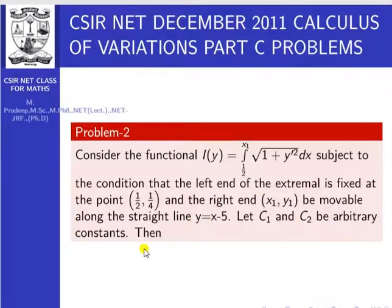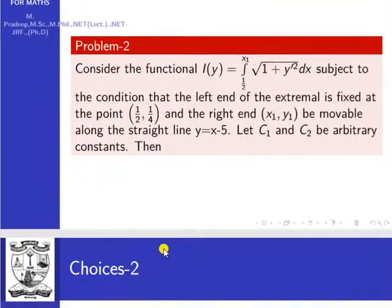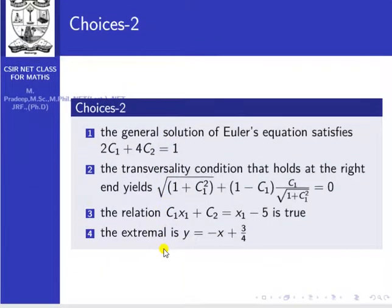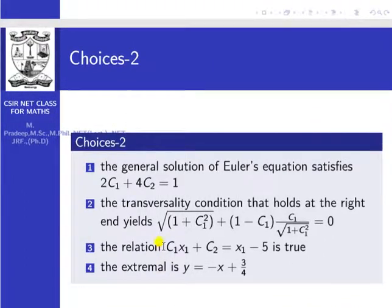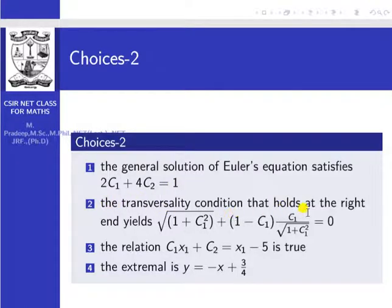Let c1, c2 be arbitrary constants. Then the options play a very important role for this problem. Option 1: the general solution of the Euler equation satisfies 2c1 plus 4c2 equal to 1. Option 2: the transversality condition that holds at the right end yields square root of (1 plus c1 squared) plus (1 minus c1) times c1 divided by root of (1 plus c1 squared) equal to 0. Option 3: the relation c1*x1 plus c2 equal to x1 minus 5 is true. Option 4: the extremal is y equal to minus x plus 3/4.